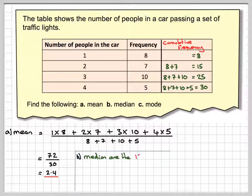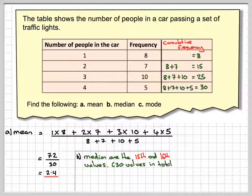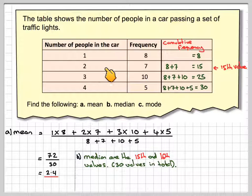So there are 30 values altogether, so the middle values were the 15th and the 16th values. Where are they? The 15th value is the last one here, but the 16th value is a 3. This is the 15th value. It's a 2.